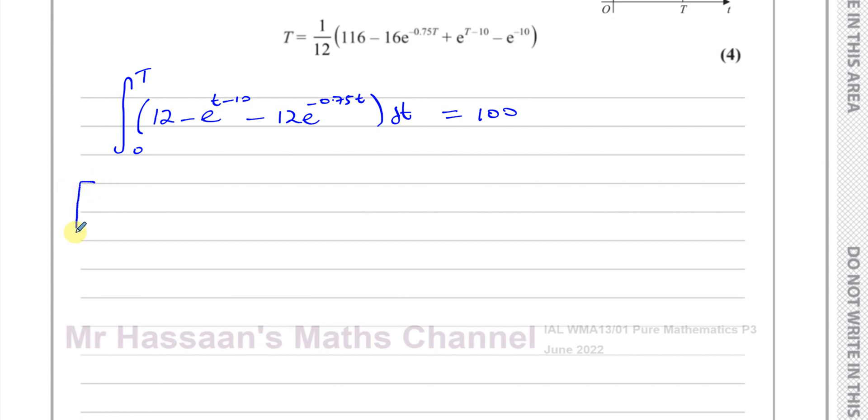Let's make a start. To integrate this, everything's ready for integration. This 12 is going to become 12t, and this is minus e to the power of t minus 10 divided by the differential of what's inside the function. For the exponential function, when we are integrating, we divide by the differential of what's inside the function.